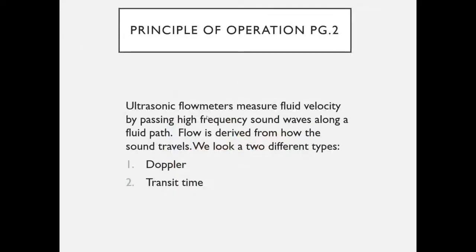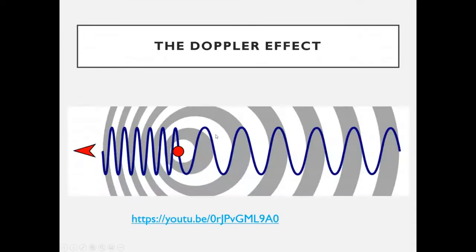Ultrasonic measurement works by passing high frequency sound waves along a fluid path and deriving flow from how that sound travels. We're going to be looking at two specific types: the Doppler style and the transit time style. We'll start with Doppler.